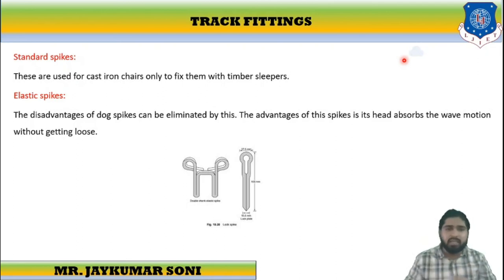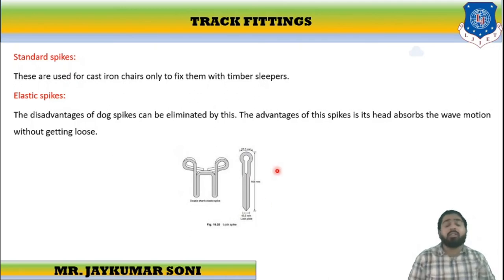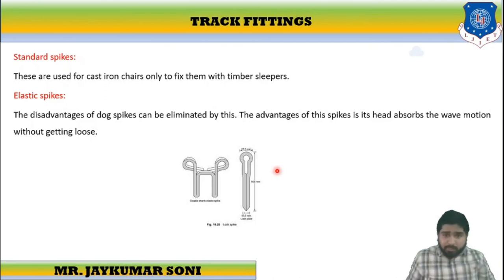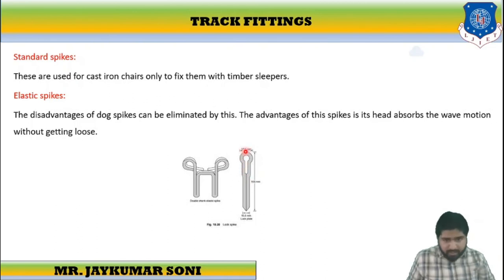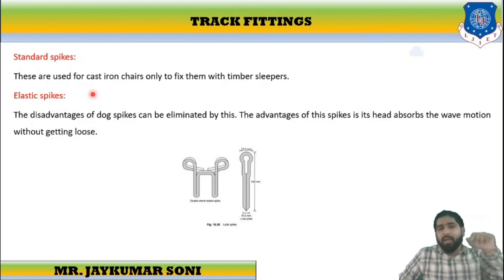Elastic spikes can eliminate the disadvantages of dog spikes. The key advantage of the elastic spike is its head design — the head absorbs wave motion without getting loose, because the head section is round in shape, unlike the flat head of a dog spike. With dog spikes there were chances of being driven out, but an elastic spike can resist the wave action.